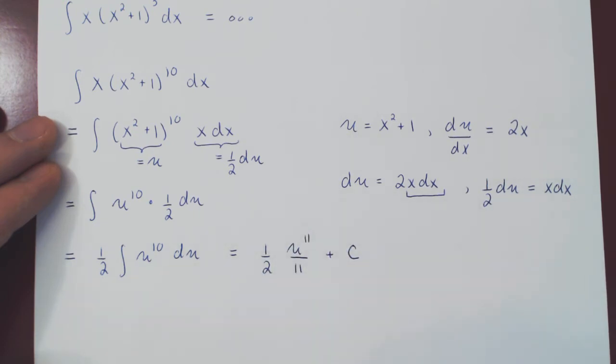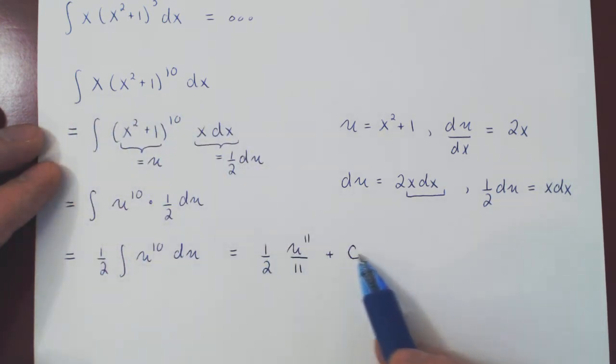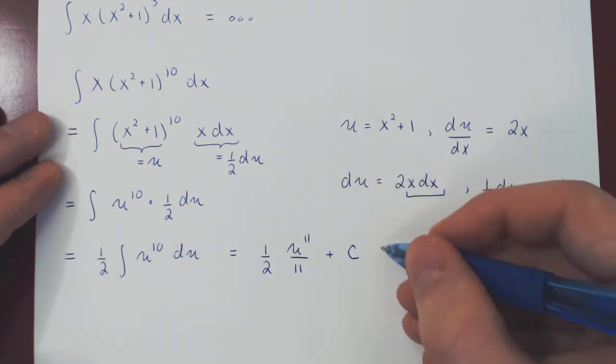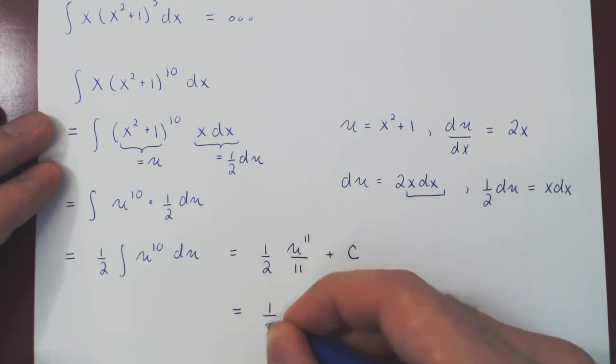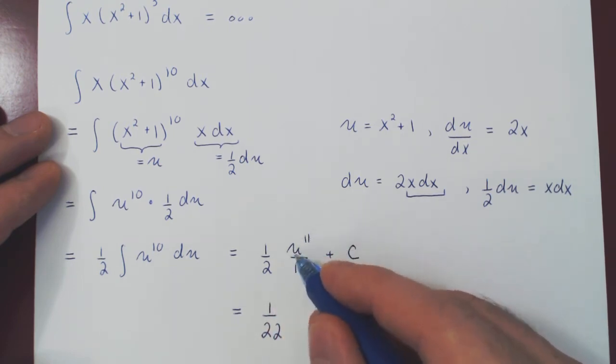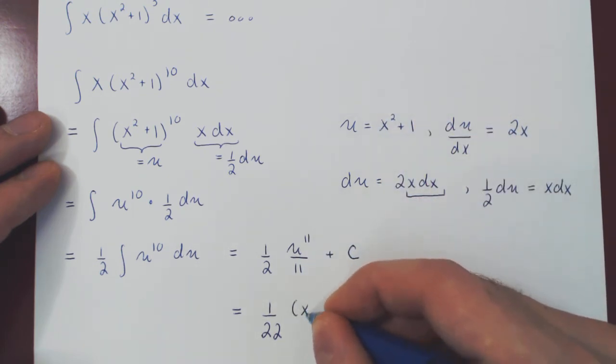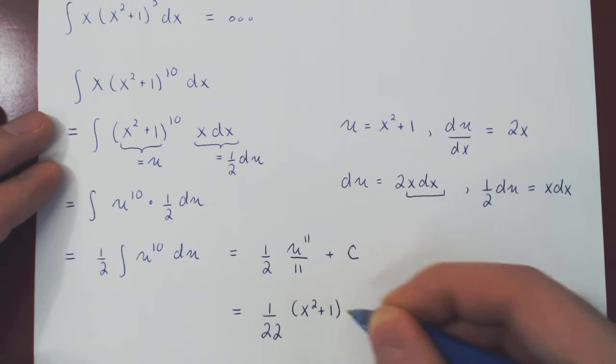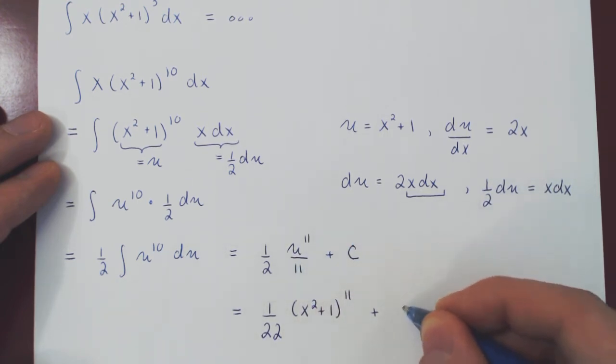And now we're done with the integration. But because the original integral was a function of x, we want to give our final answer not as a function of u, but as a function of x. So we go back and say, this is 1 over 2 times 11, 1 over 22, u to the 11. But u as a function of x is x squared plus 1. So replacing u by x squared plus 1, we get x squared plus 1 to the 11, plus c.